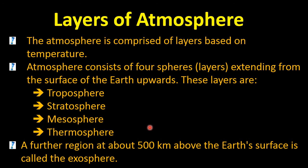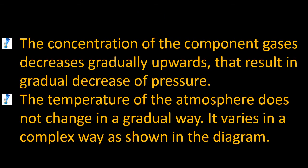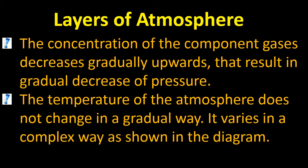If this question comes in your exams, be very careful while writing. First describe what atmosphere is, then the types of atmosphere, so the examiner understands that you can identify all points related to the layers of atmosphere. In the layers of atmosphere, two things matter a lot: pressure and temperature. Regarding pressure, the concentration of component gases decreases gradually upwards.